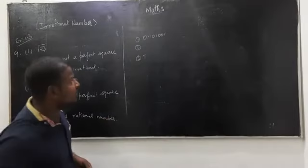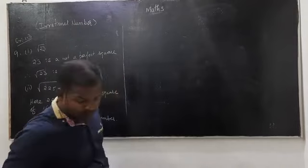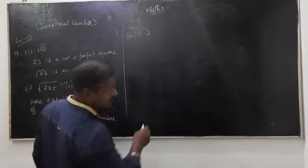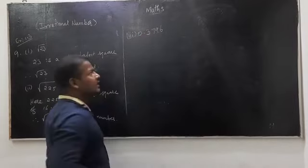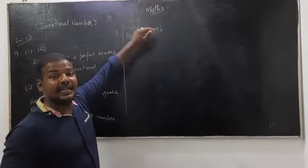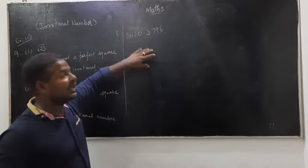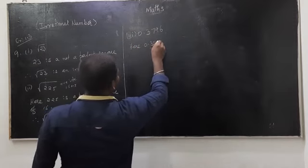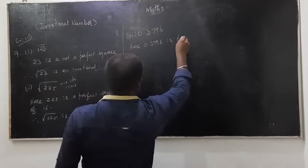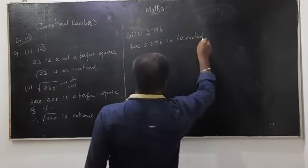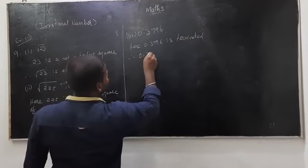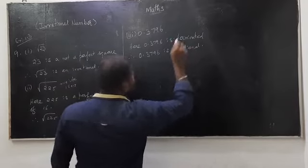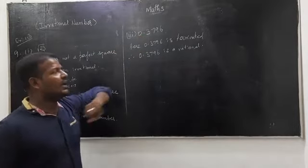Third number: 0.3796. This is a terminated value — it ends. A terminated decimal means it is a rational number. So 0.3796 is terminated, therefore 0.3796 is a rational number.